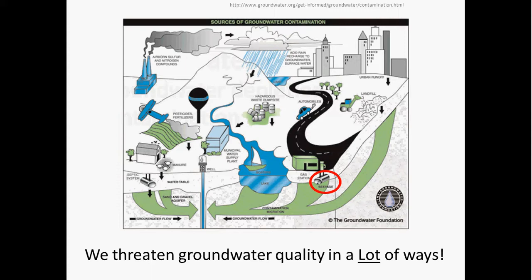Storage tanks are used for storage of gasoline, oil, chemicals, or other types of liquids. They can be either above ground or below ground. There are estimated to be over 10 million storage tanks buried in the United States. Over time, these tanks can leak and contaminate groundwater.